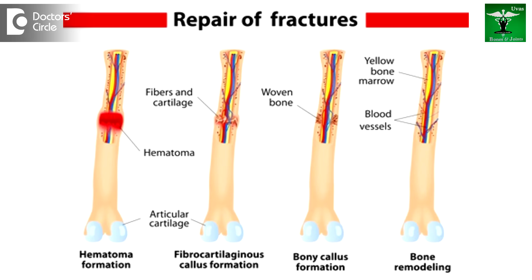The second stage in the inflammatory phase is the phase of fibrin formation, wherein platelets form fibrinogen which connects the bone end to end at the fracture site and starts laying the bone matrix.